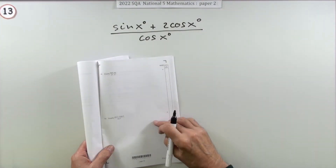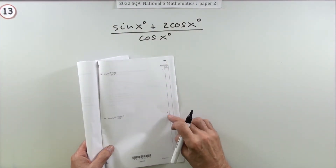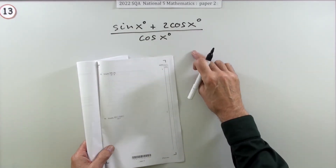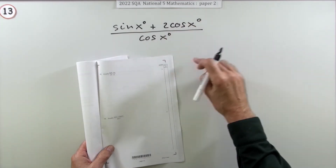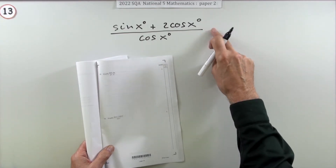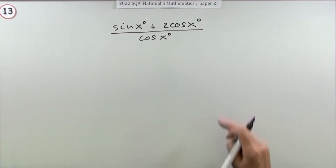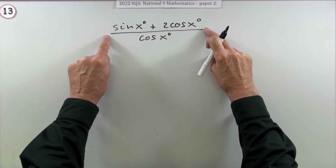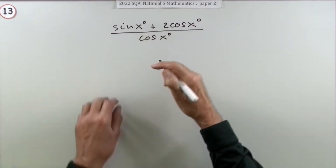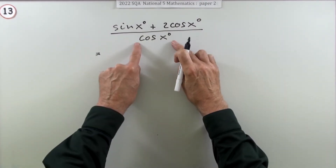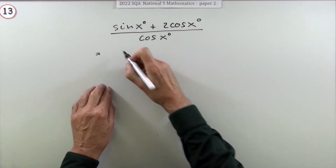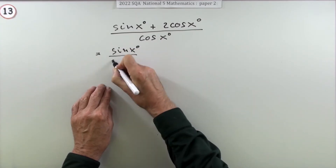Number 13 from Paper 2 of the 2022 National 5 — a two-mark question on manipulating trigonometrical expressions. It's not quite the trig identity question because you haven't been told what it's equal to; you just need to simplify the expression. The main thing is that the line extends under both terms in the numerator, so cosx divides both of them. Any simplification means dividing both parts of the numerator by cosx, giving sinx over cosx...